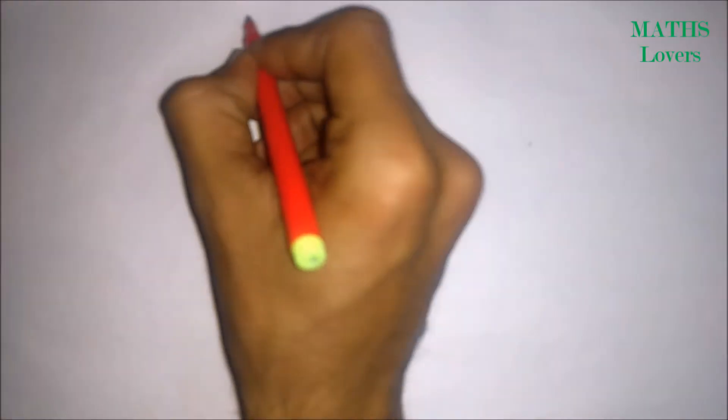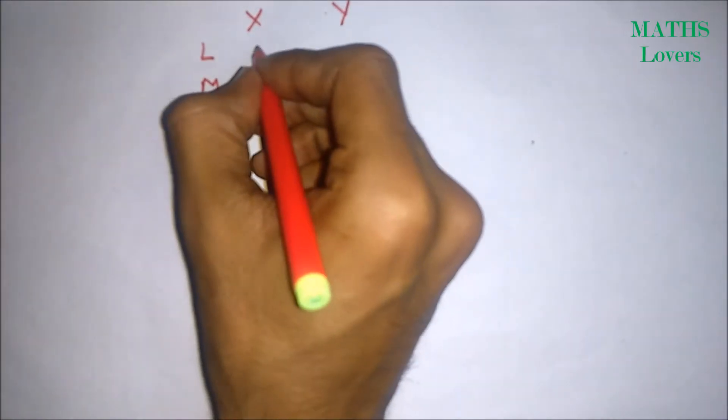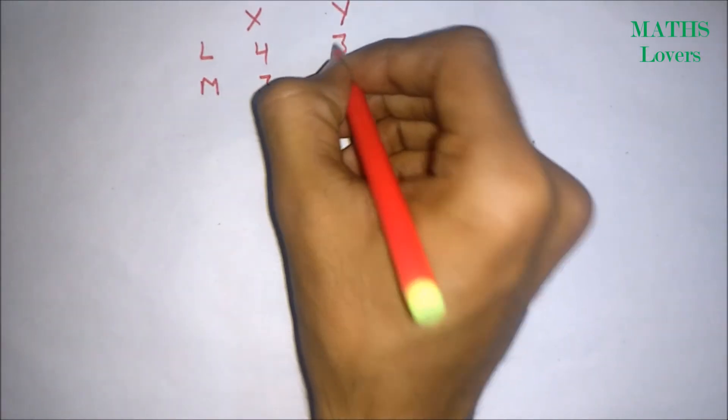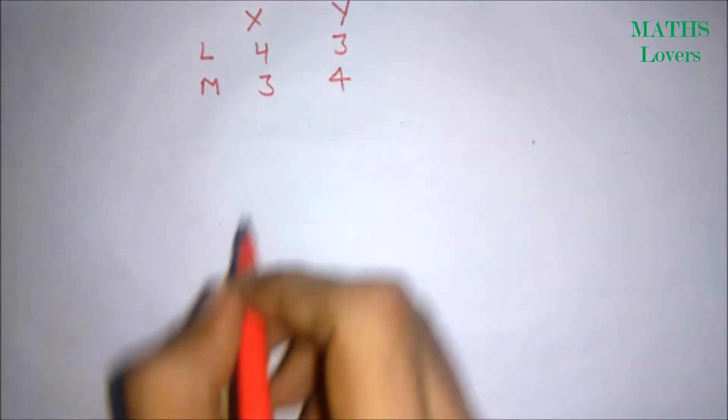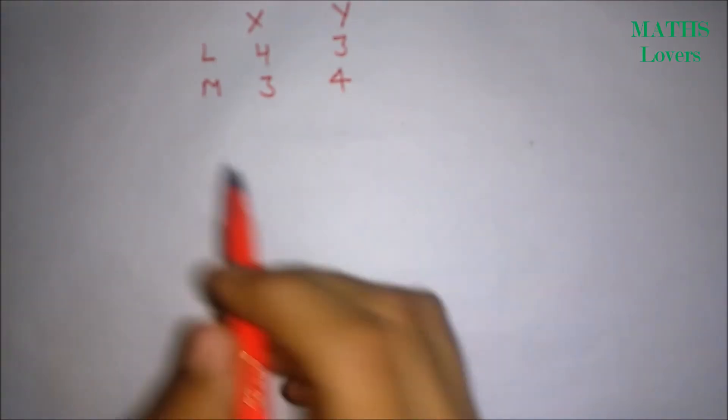Hello friends. In this question, a man X has seven friends and Y also has seven friends, in which three are ladies and four are men. X has four ladies and three men, and Y has three ladies and four men. We need to invite six friends to the party where each of X and Y should invite three friends.